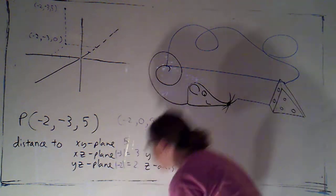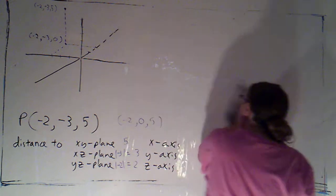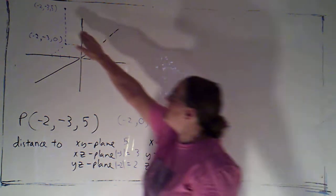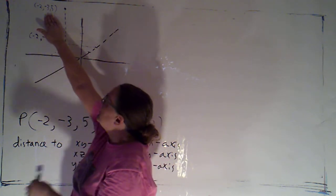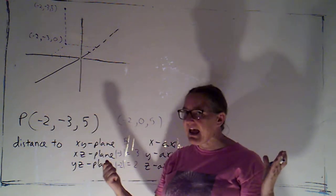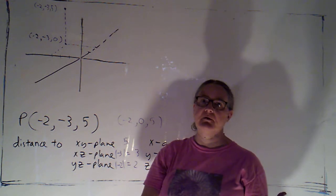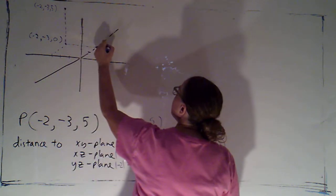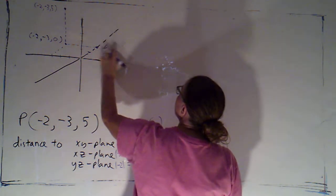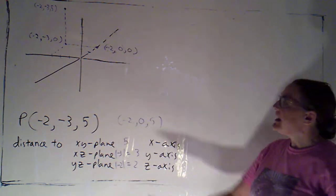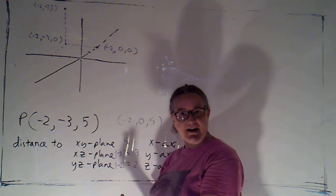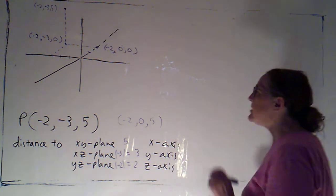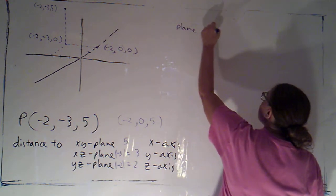To find the distance to one of the axes, I need to find the point on — say — the x-axis that's closest to P. I've come two back, three to the left, and five up. To get to the x-axis, I have to go to the right and go down, but I don't have to go forward or back at all. The closest point on the x-axis is negative two, zero, zero. On the x-axis, the y value must be zero because I haven't gone left or right, and z must be zero because I haven't gone up or down, but the x value stays the same. Essentially, I can work in the plane x equals negative two.